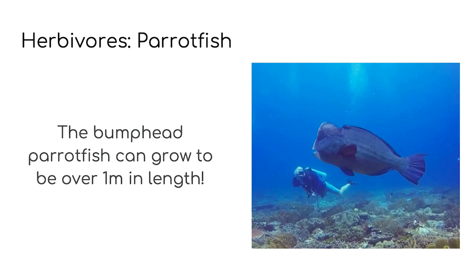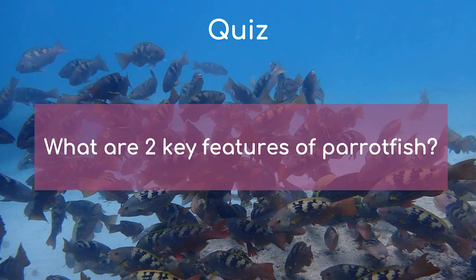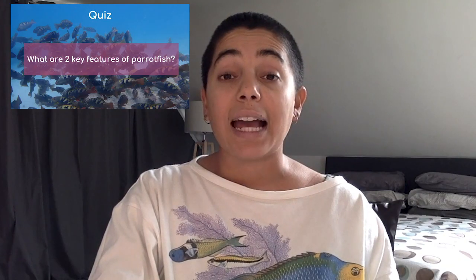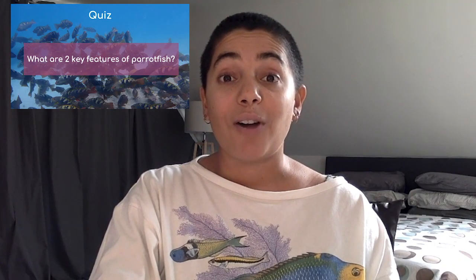Finally, the biggest parrotfish species is called the bumphead parrotfish, which can grow over a metre in length. They have a large bump on the front of their head which is flat — it looks as though they've been bumping into walls. They're often seen in schools on the edge of coral reefs. Can you think what the two key features of a parrotfish are? Just think about a parrot and you won't be far off.